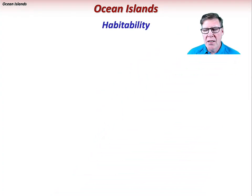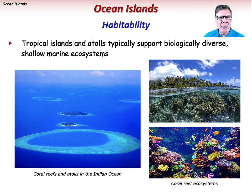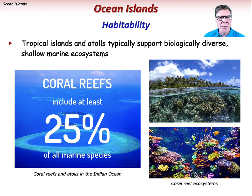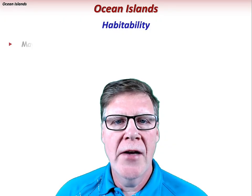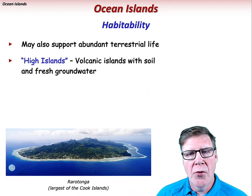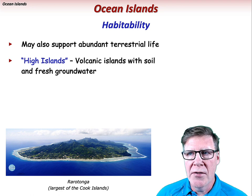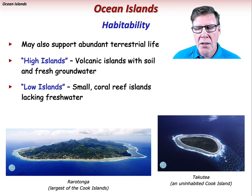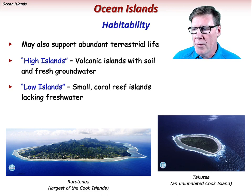Tropical islands and atolls typically support biologically diverse shallow marine ecosystems. Coral reefs occupy less than one-tenth of one percent of Earth's ocean areas, yet they include at least 25 percent of all marine species. If they are large enough, ocean islands may also support abundant terrestrial life. High islands are volcanic in origin, with soil and fresh groundwater. Low islands are smaller and built upon coral reefs. While they may support limited plant and animal life, they lack fresh groundwater and are typically uninhabited, at least by humans.